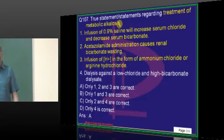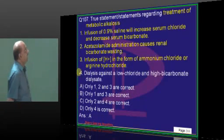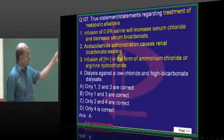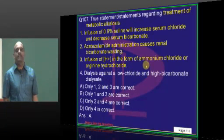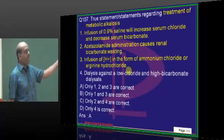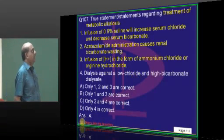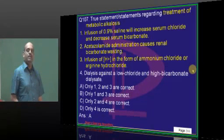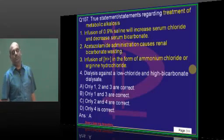How do you treat metabolic alkalosis? You will give 0.9% saline, or acetazolamide so that proximal bicarbonate wasting happens, or you can give an acid infusion. You do not do dialysis for metabolic alkalosis. Dialysis is done more often for metabolic acidosis and hyperkalemia.